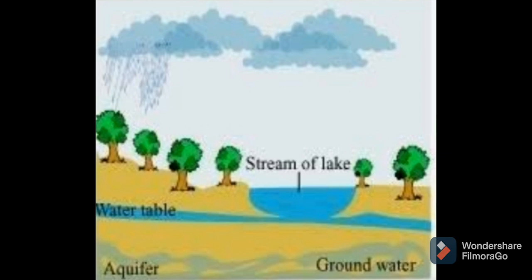At places, groundwater is stored between layers of hard rock below the water table. In fifth standard we studied about different layers of soil — the last layer is bedrock, where hard rock is present. When water fills up the spaces between layers of hard rock below the water table, this is called an aquifer. You can see in the diagram what is the aquifer and what is the water table — the first layer is the water table, and at the end of the soil layer there is bedrock where water gets collected, called the aquifer.